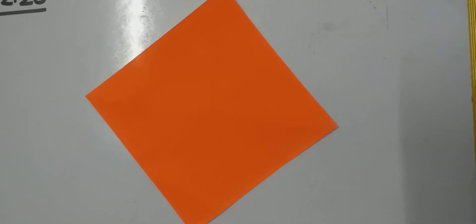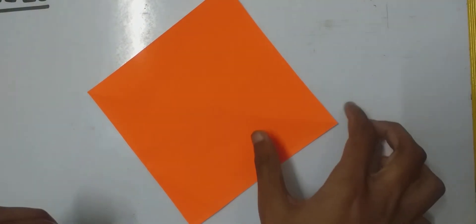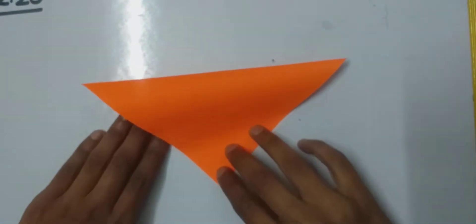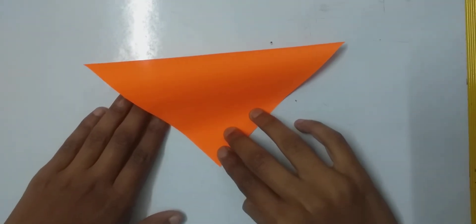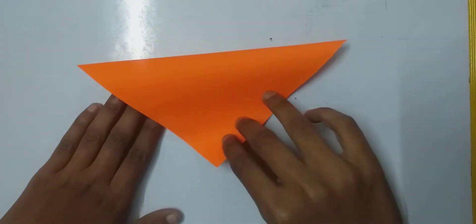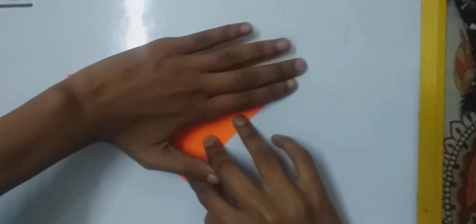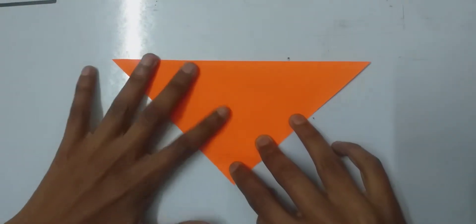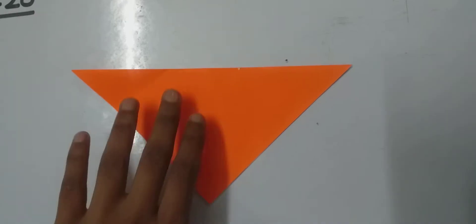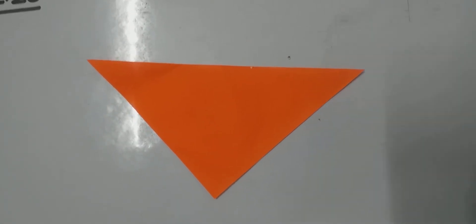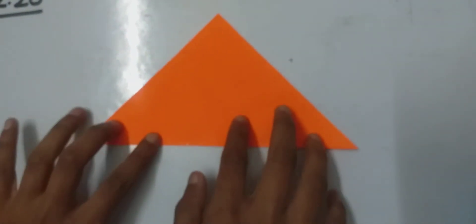So children, take one origami sheet and fold the sheet in half by folding the top corner to the bottom corner like this. So children, it looks like a triangle.